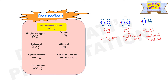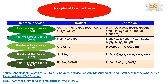Examples of free radicals are superoxide anions, singlet oxygen, peroxyl, hydroxyl, alkoxyl, hydroxyperoxyl, carbon dioxide radicals, carbonate radicals, etc.